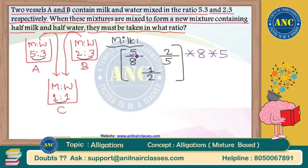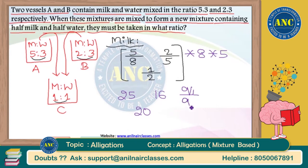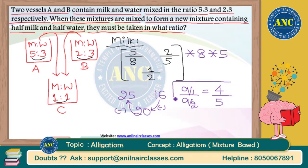Multiplying through by 40: 5/8×40=25, 2/5×40=16, and 1/2×40=20. Using the allegation formula: Q1/Q2 = (P2−P)/(P−P1) = (16−20)/(20−25) = (−4)/(−5) = 4/5. The answer for this question is 4:5.